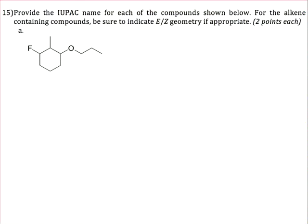Okay, question 15 wants us to name a cyclic compound containing an ether. So in this compound, the ether is our highest priority group. So we start our numbering of the ring at the ether.